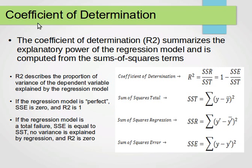The next metric is the Coefficient of Determination, or R². It summarizes the explanatory power of the regression model and is computed from sum-of-squares terms. R² describes the proportion of variance of the dependent variable explained by the regression model. It is computed as SSR over SST. If the regression model is perfect, the Sum of Squares Error (SSE) is zero; if the regression model is a total failure, SSE equals SST.